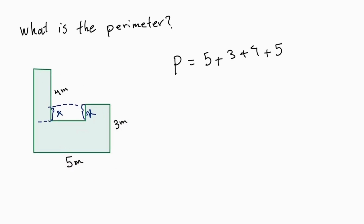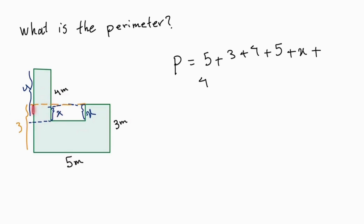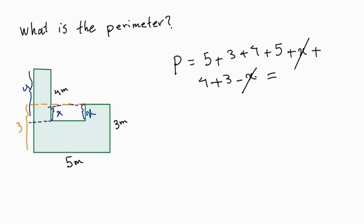And I know that this is 4 and this is 3. So I can write P is equal to 5 plus 3 plus 4 plus 5 plus x plus 4 plus 3 minus x, because we're double counting this side. So this is going to be 4 plus 3 minus x. And as you can see, this x and this x cancel out. So we didn't even need to know this in the first place, because we only want to find the perimeter.